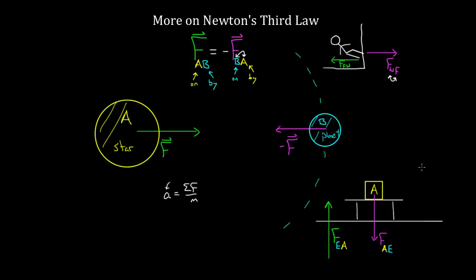This might seem ridiculous — if you jump up, you move around, but the Earth just sits there. If your forces are equal, how come the Earth doesn't move around like you do? Again, just because the forces are the same, the acceleration doesn't have to be the same. The mass of the Earth is so big compared to your mass, there's basically no acceleration, even though the forces on you and the forces on the Earth are the same. These two are third law partner forces — joined together forever. They have to be equal no matter what happens: accelerating or not, motion or no motion, hitting a wall, sitting on a table, falling through space — these two forces must always be equal and opposite because of the third law.